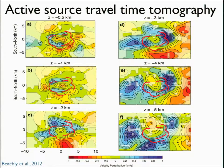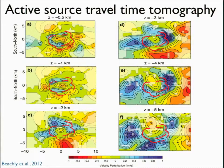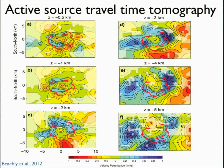This is the region where we interpret there to be a magma chamber, and the high-velocity shoulders are probably cooled intrusives. However, the velocity anomaly we're recovering is pretty small and can be explained just by elevated temperature, so this is not conclusively indicative of any kind of magma chamber.